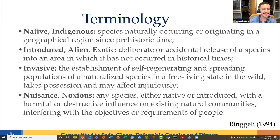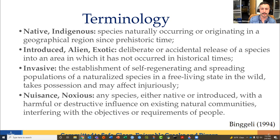Invasive is the big one — it's the establishment of self-regenerating and spreading populations of species living in the wild, which takes possession of a habitat and may impact the area or other species injuriously. Nuisance or noxious species aren't commonly used terms, but they're really important. They're typically invasive but defined as species injurious to public health, agriculture, recreation, wildlife, or property. Noxious weed is commonly defined as a plant that grows out of place and is competitive, persistent, and pernicious — meaning it negatively impacts something.